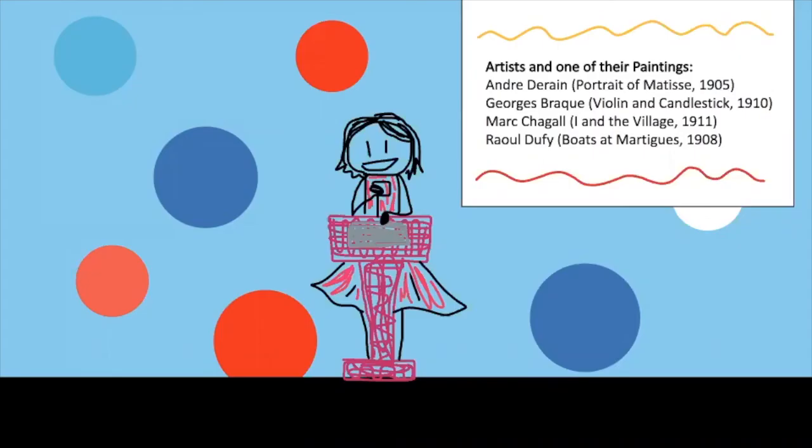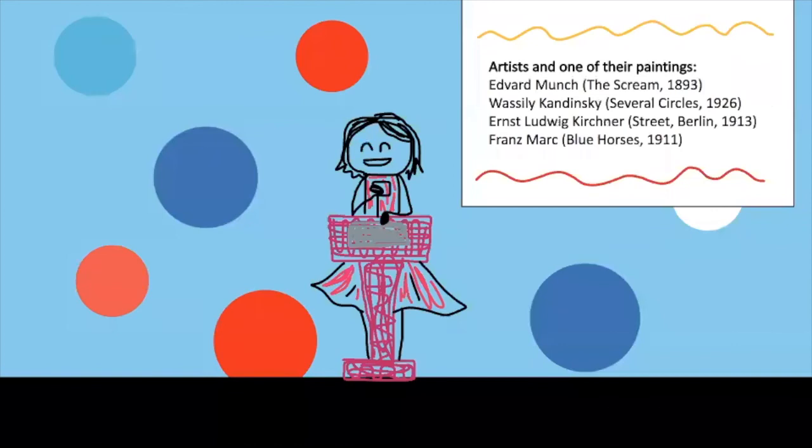Next is Expressionism, from 1905 to 1925. The point of Expressionism wasn't really to show realistic things in painting, but instead to show emotions in unique ways. The Scream, painted in 1893 by Edvard Munch, is part of the Expressionism era.